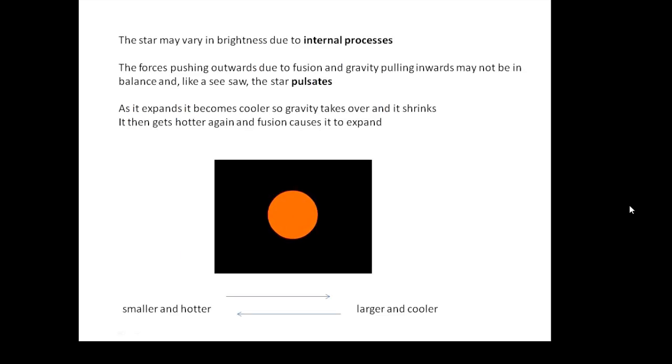Talking about things which may be happening inside the star, this often happens to stars near the end of their life. This is probably what will happen to our sun when it becomes a red giant. It will pulsate.